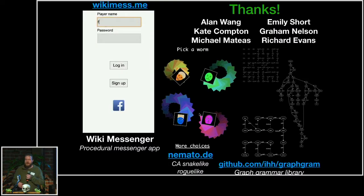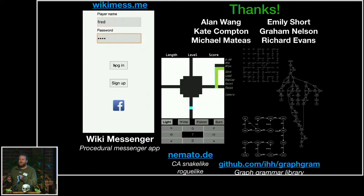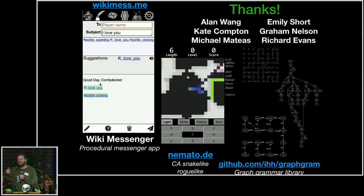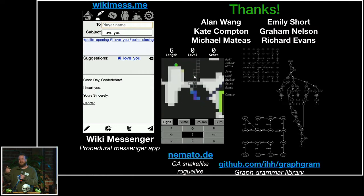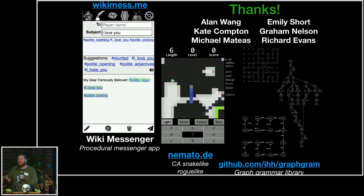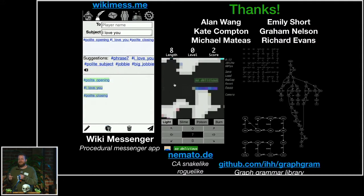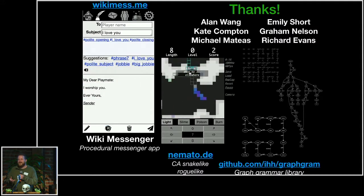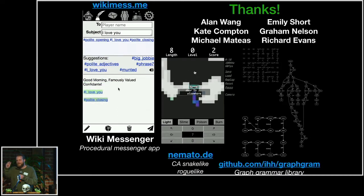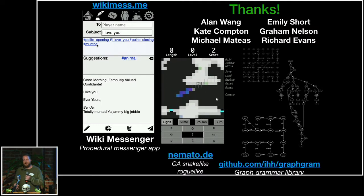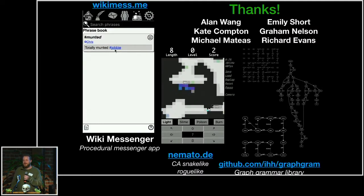I haven't talked at all about one of my other projects, but I think it is relevant, so I'll mention it very briefly. WikiMess.me is a wiki messenger — it's not released yet, but I would like to get discussions kicked off. It's basically a procedural messenger where the messages are generated from an underlying grammar. There's also Nematode — you can check both of those out. There are demos online, and some of this is open source code. In particular, the graph grammar library, which I would encourage you all to pick up and look at.